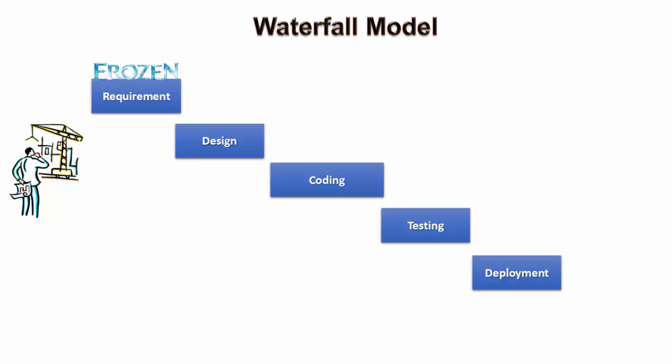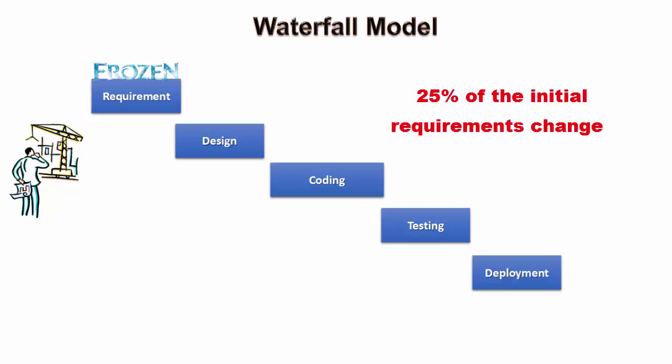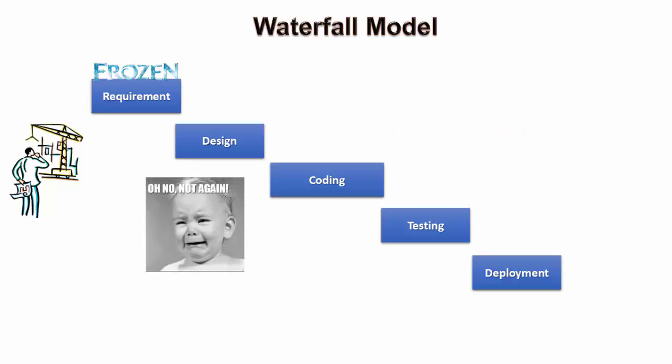However, in a changing market condition with cutthroat competition, freezing requirements becomes almost impossible. Data shows that a minimum of 25% of the original requirements change during the development period. These changes lead to rework. Assume that 80% of software features are ready, but the remaining 20% is delayed — in that case, either all features or none would go into production.